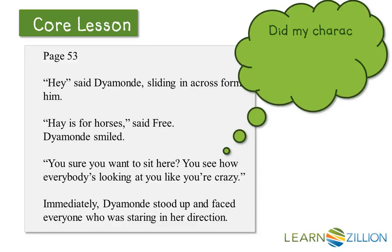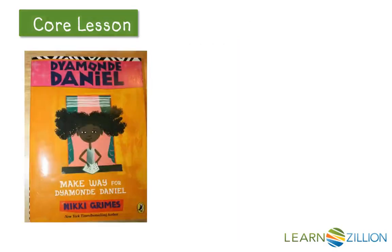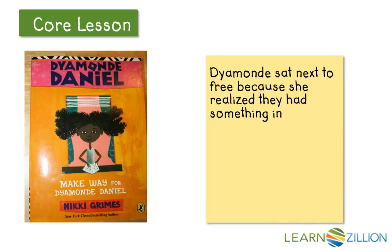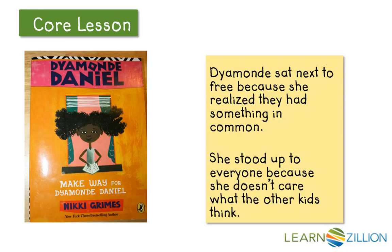Did my character do this because he or she feels a certain way? Why did Diamond stand up? Well, let me think. Diamond sat next to Free because she realized that they had something in common. She's feeling like they're becoming friends, and she was not afraid to sit by him in the lunchroom. She stood up to everyone because she doesn't really care what the other kids think.